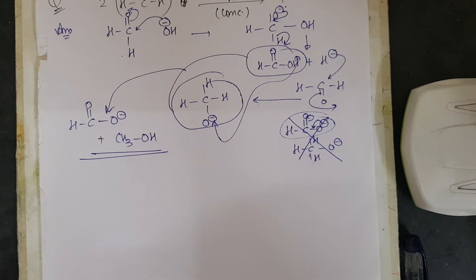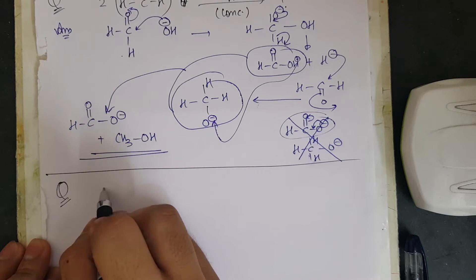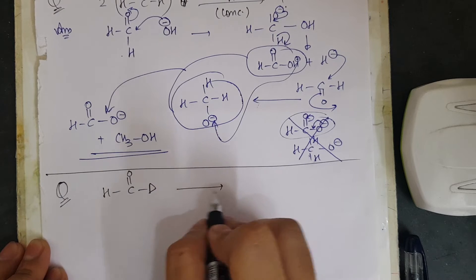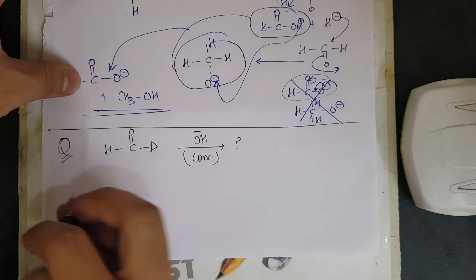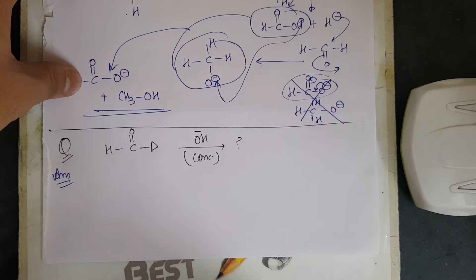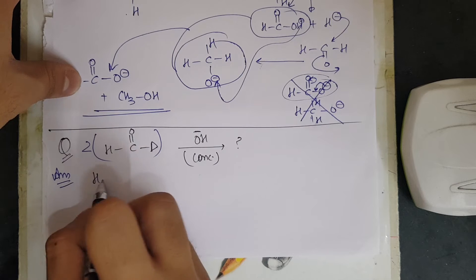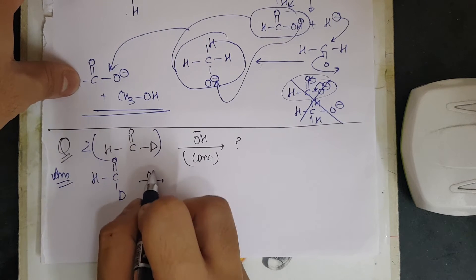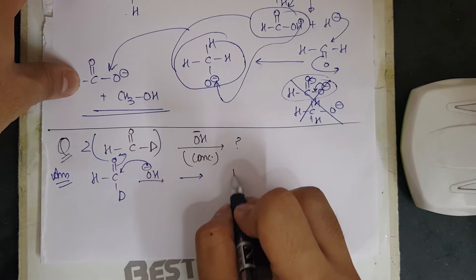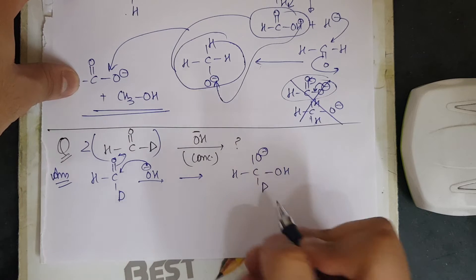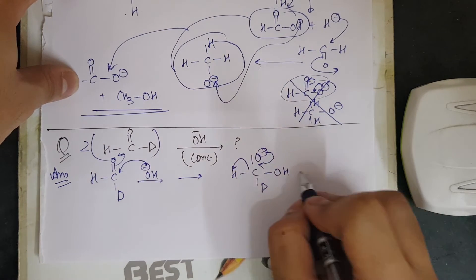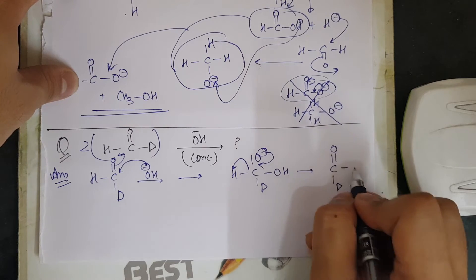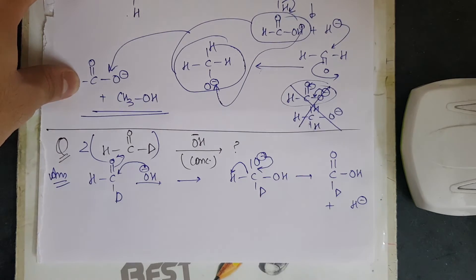Let me show one more example. If we have HCOD (where D is deuterium) with concentrated OH⁻, what is the product? Again, there is no alpha hydrogen here, so we follow the Cannizzaro mechanism. Two moles are given. OH⁻ attacks HCOD to give HC(O⁻)(OH)D. The next step: the electron density takes out H⁻, giving C=O with D and OH, plus H⁻.